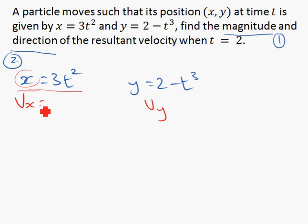vx is really just differentiate x with respect to t, dx/dt. And what do you get from there? Differentiate 3t², you will get 6t. That's it.